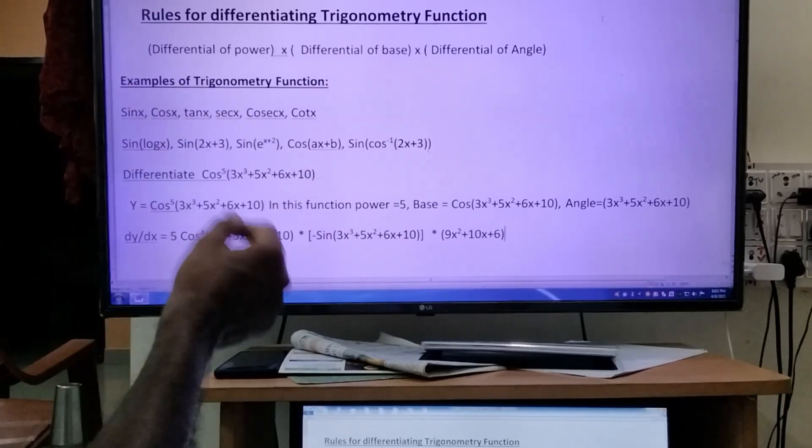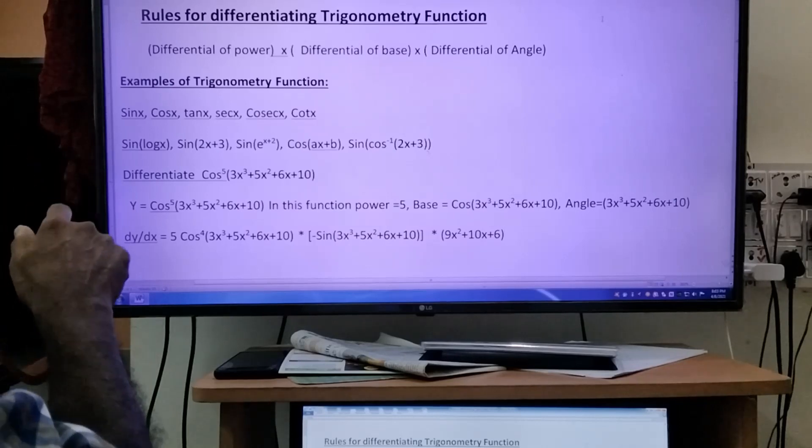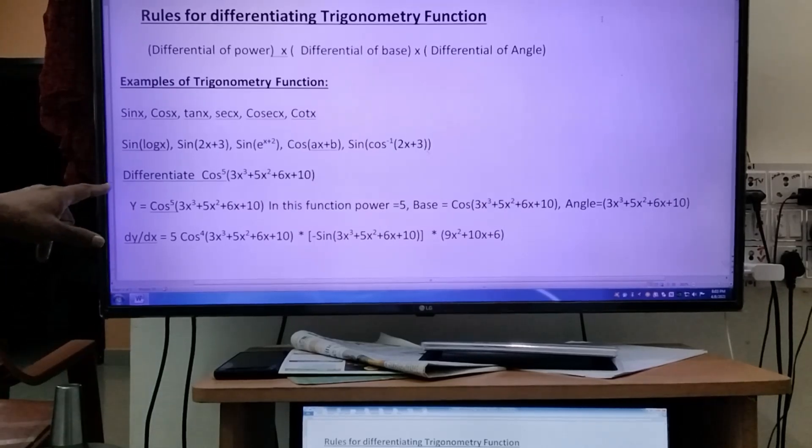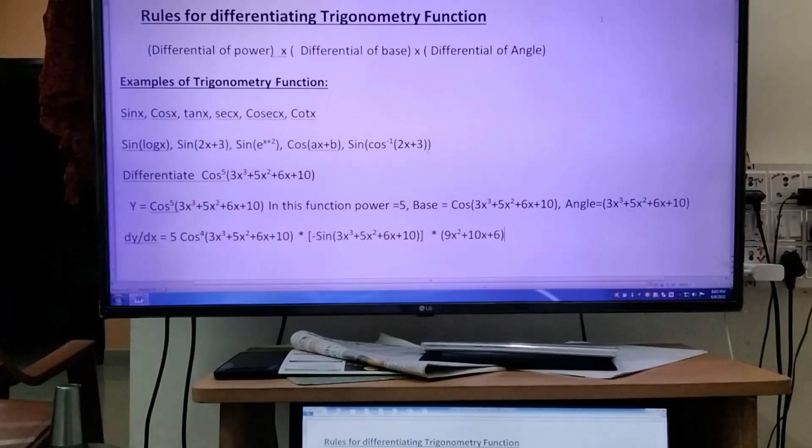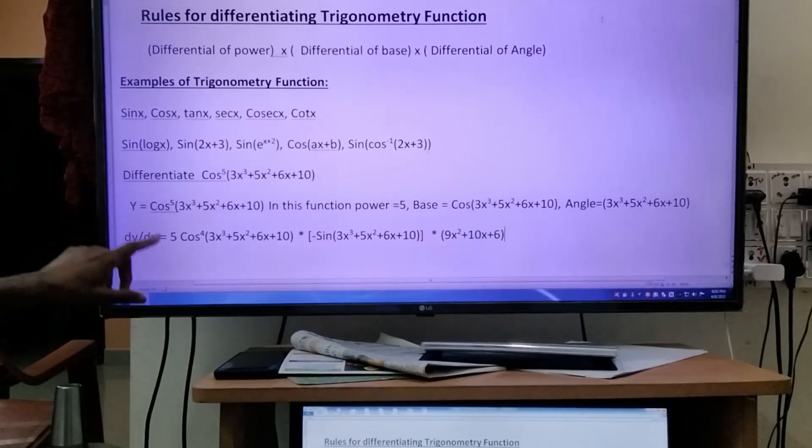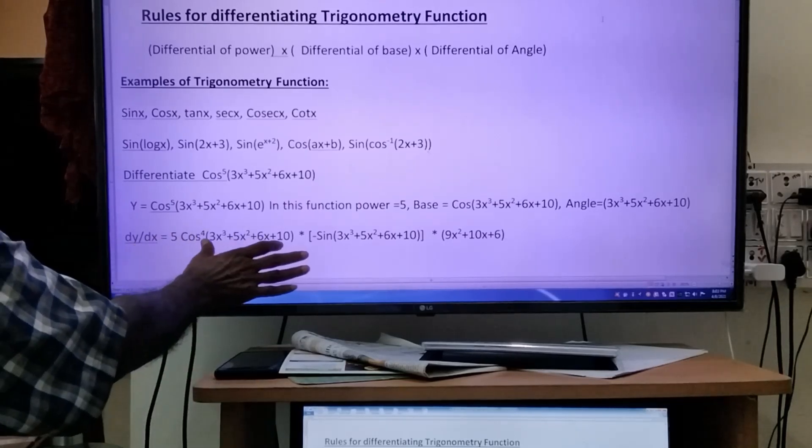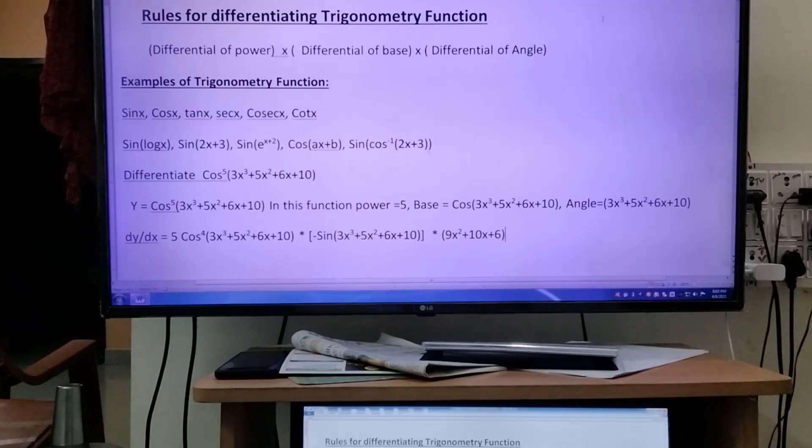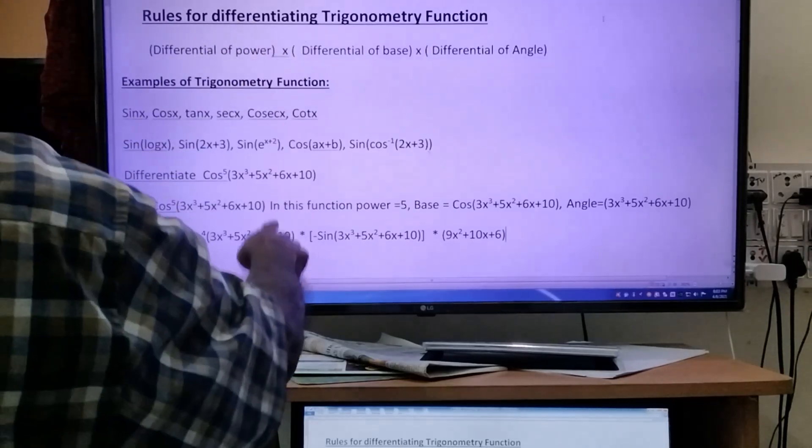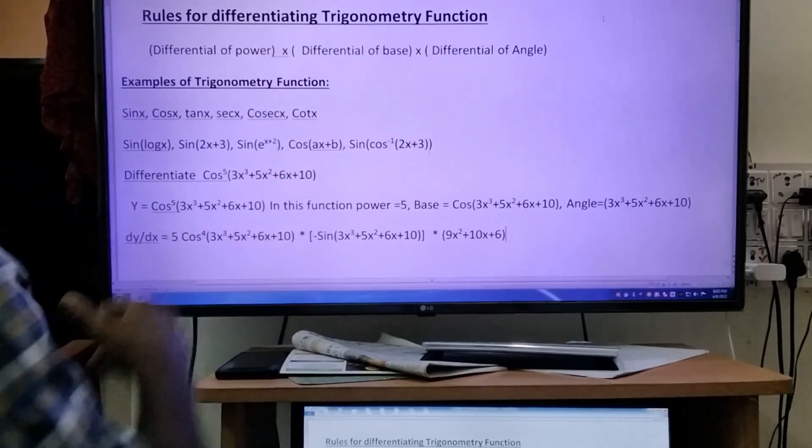Now I am differentiating this function. First, differential of power. What is power? 5. You know the fundamental basic power rule in calculus: differential of x to the power n is n times x to the power (n-1). That's why 5 cos to the power (5-1) is 4. I'm writing (3x³ + 5x² + 6x + 10). Then after this, what I told you into that is the star mark.